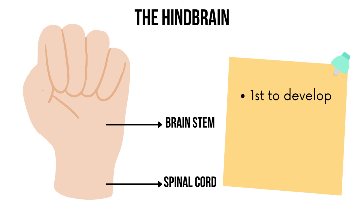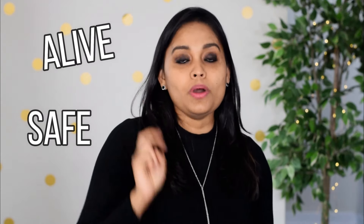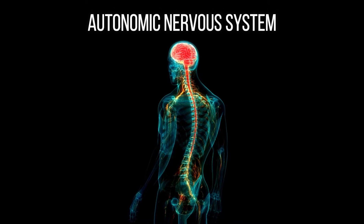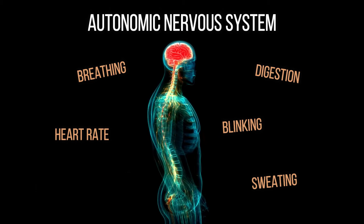We call this part the reptilian part of the brain, or the lizard brain, because we share it with reptiles. It is very primitive, and its basic function is to make sure that you and I are alive and safe. It does two main things: first, it controls our body's autonomic nervous system, regulating vital functions such as breathing, heart rate, and digestion — things we don't have control over.